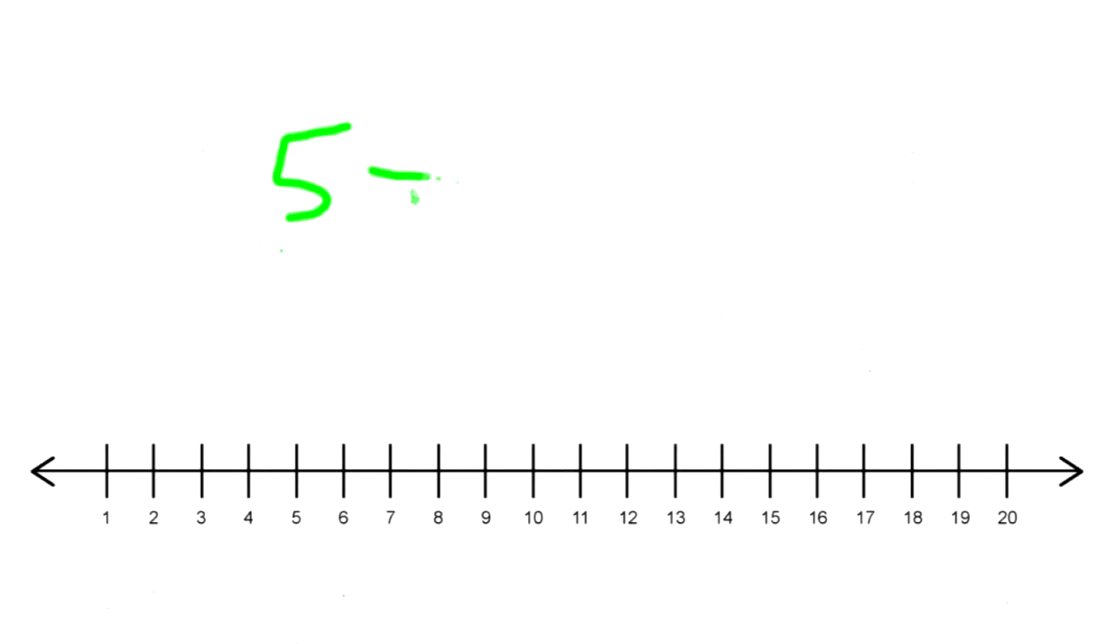Okay, let's choose the number 5 plus 7. Alright, we look for the greatest addend first of all, or the greatest number, and that would be 7. So we start on the number 7, and how many times are we going to jump? 5 times, good.